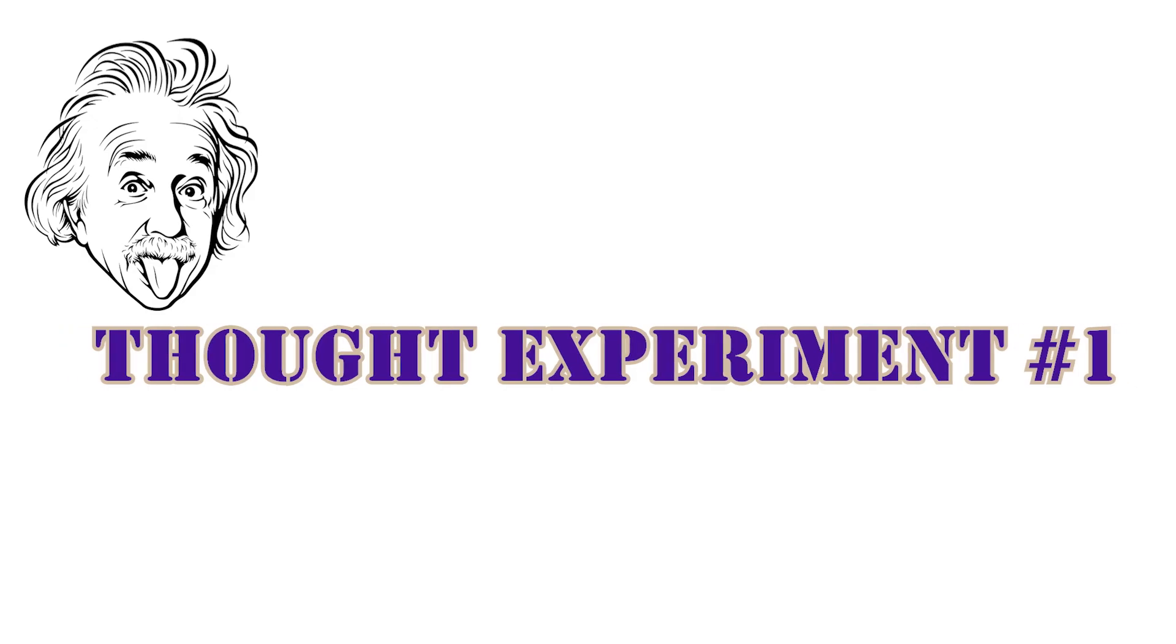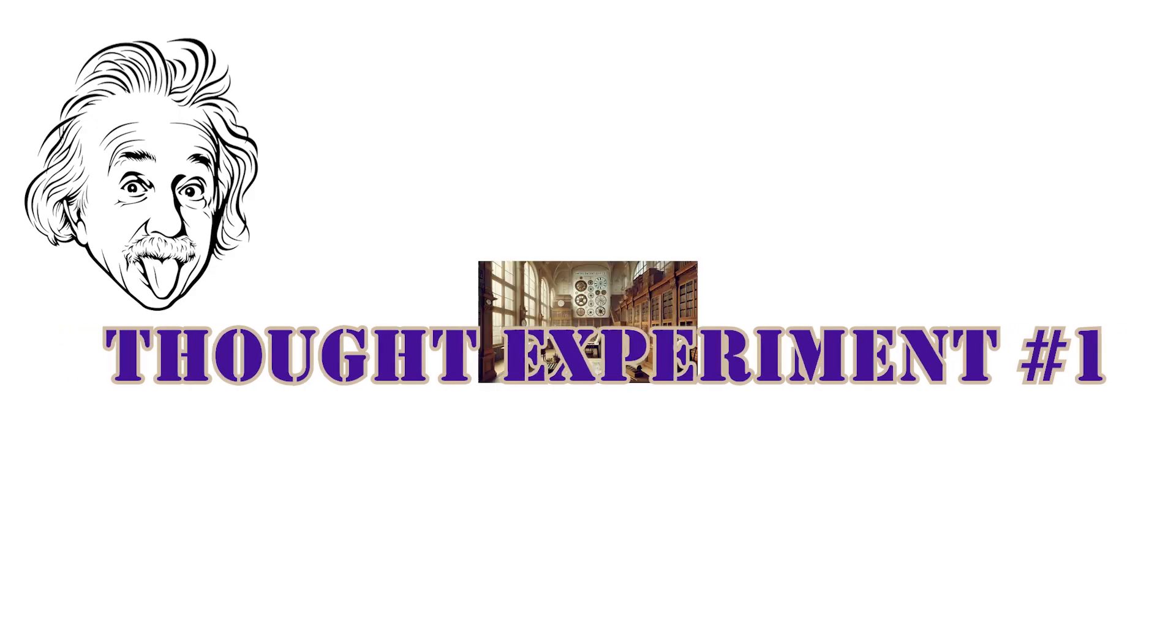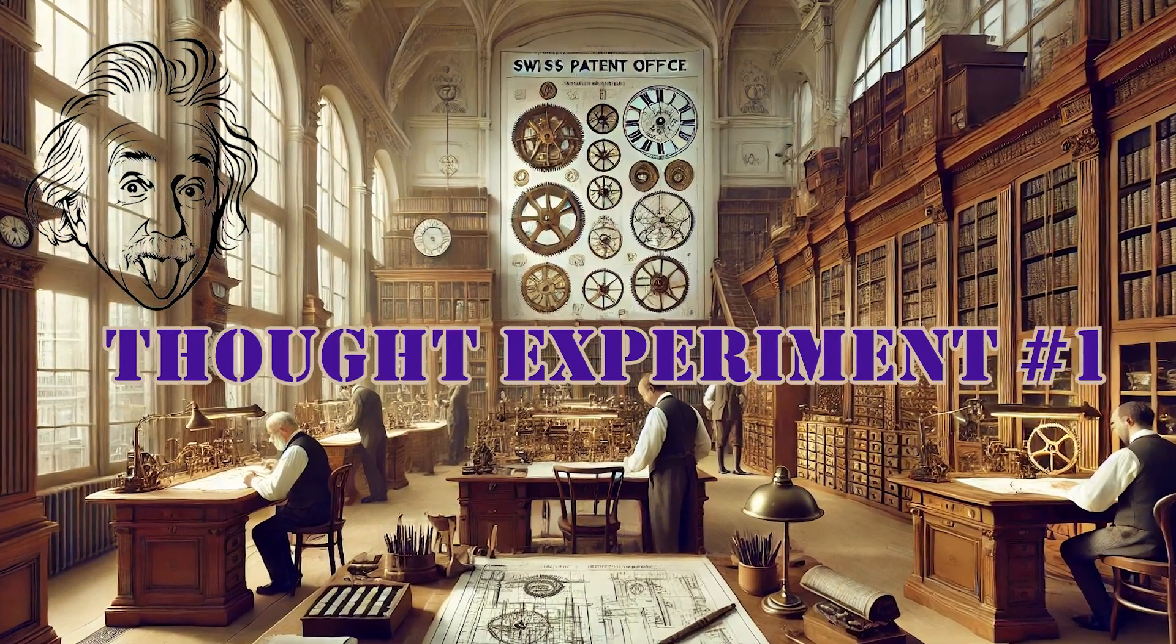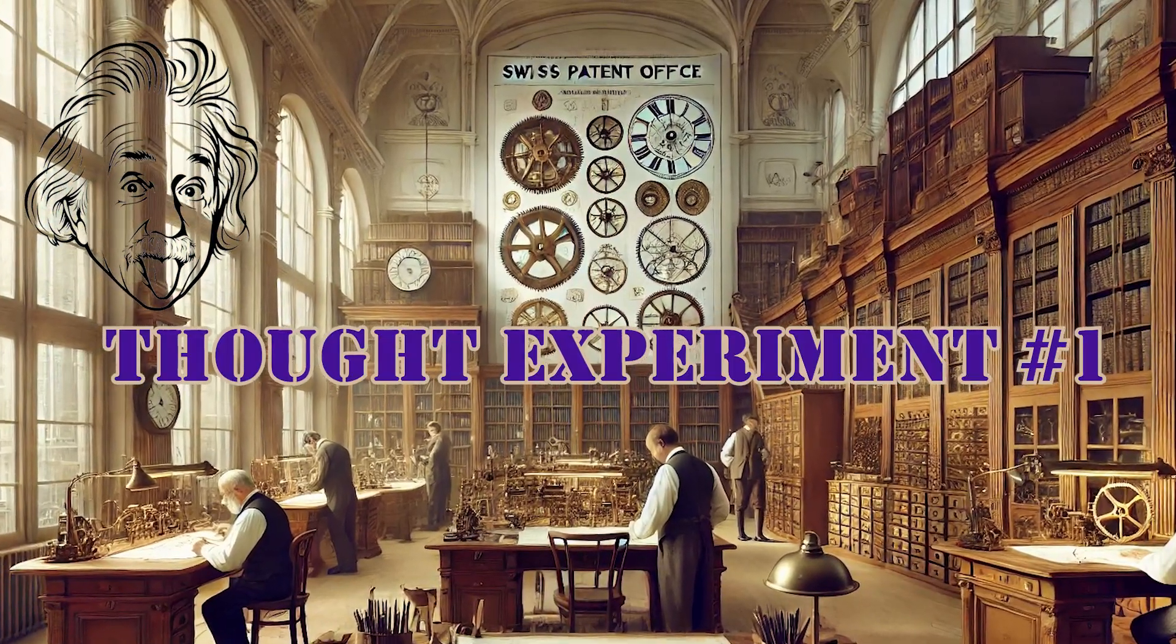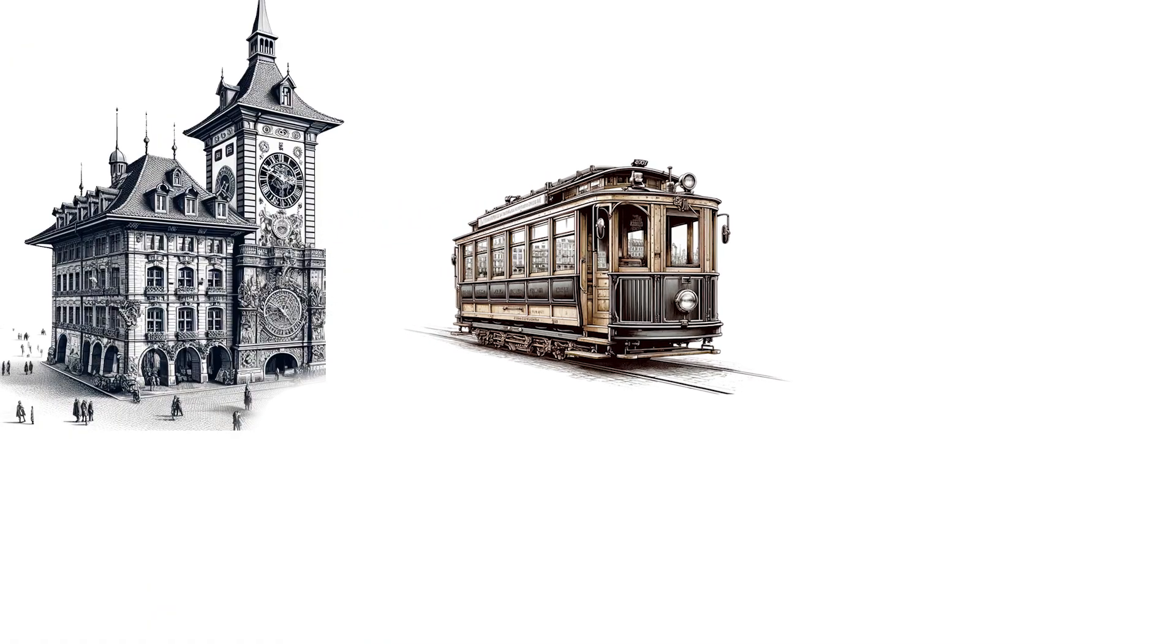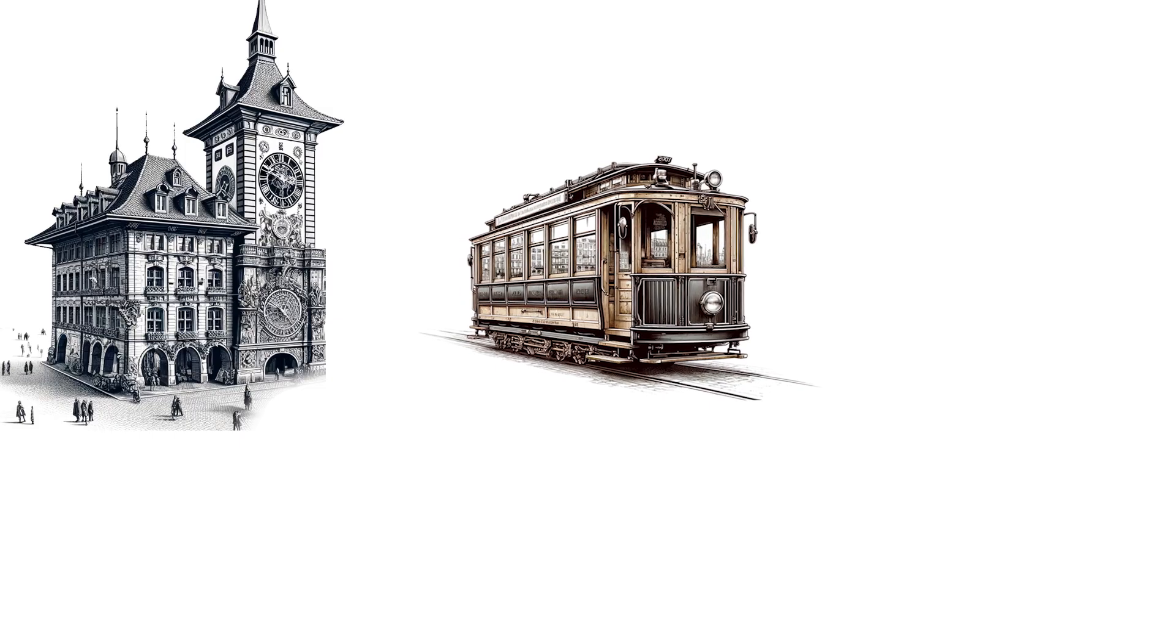Einstein figured this out with two thought experiments. As a young man, he worked at the Swiss Patent Office, evaluating submissions including clock mechanisms that were very popular at the turn of the century. One day while commuting home on the tram, the large clock in the city square caught Albert's attention.